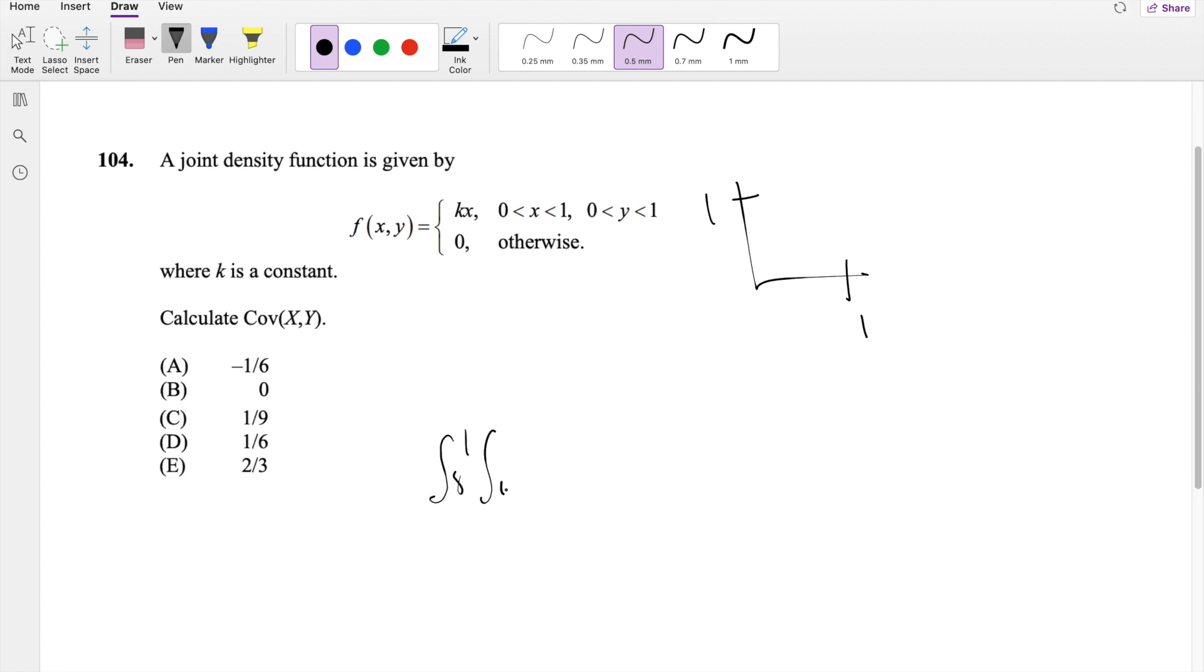So basically that's just the integral from 0 to 1, 0 to 1 for k x dx dy, and all probability integrated on their interval has to add up to 1, so this must be equal to 1.